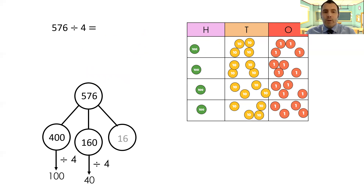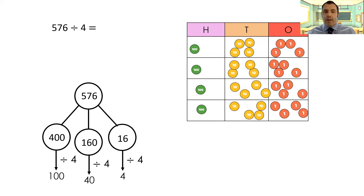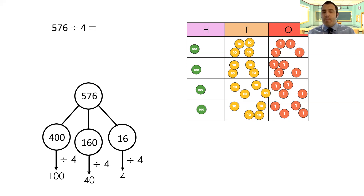Going back to the part-whole model, we've partitioned 16 as the last part. Divide that by four and we get four. So both methods give us the same answer: 100 in our grid and 100 in the part-whole model, 40 in the grid and 40 in the part-whole model, four in the grid and four in the part-whole model. Our answer is 100 plus 40 plus 4, which gives us 144.